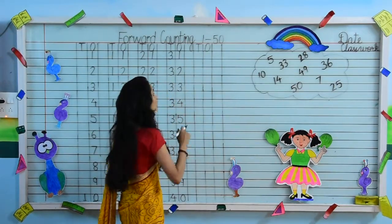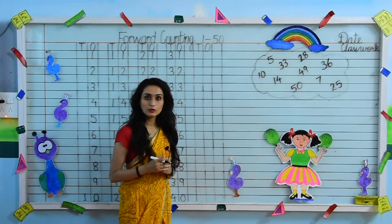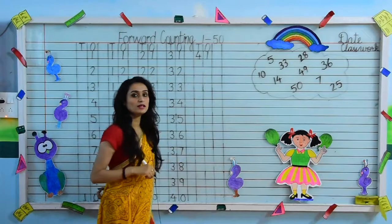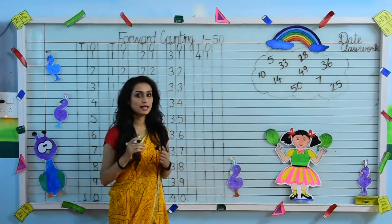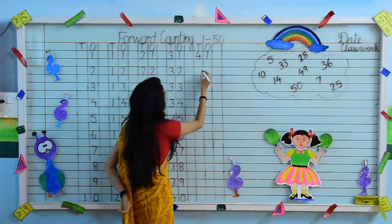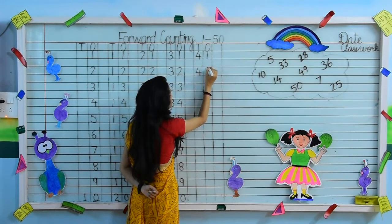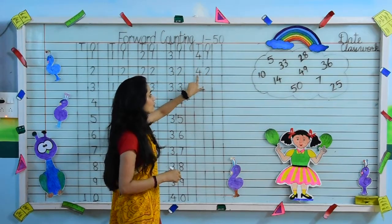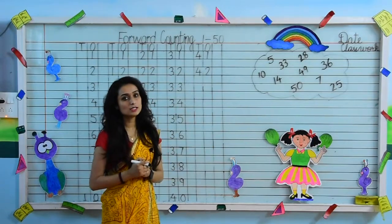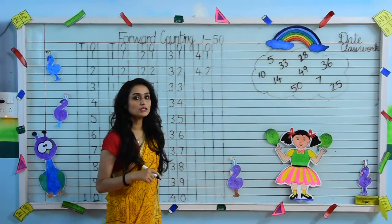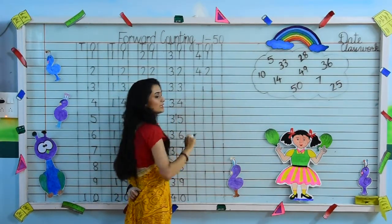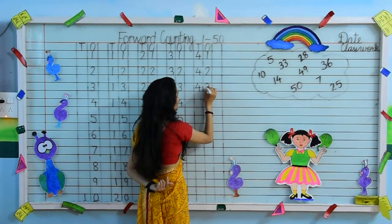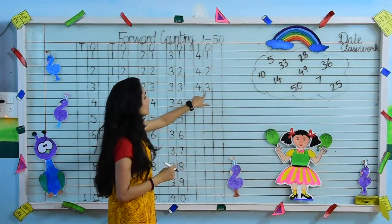Come on the last line. Our first number here is 4, 1 — 41. After 41, it's 4, 2 — 42. Because after 1, 2 is the next number and we copy 4 below 4. After 2, 3 is the next number. Below 2 we write 3, and below 4 we copy 4. So together it makes 4, 3 — 43.